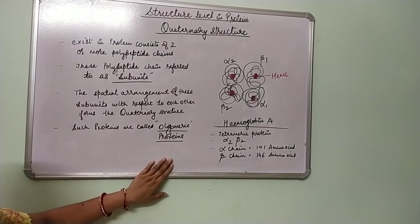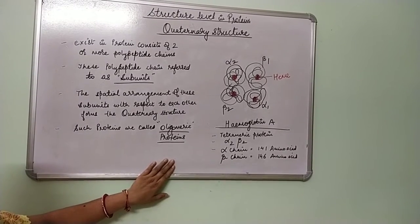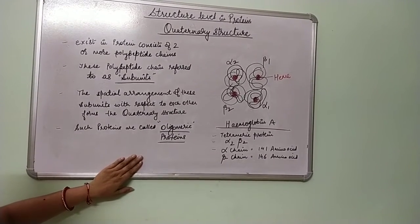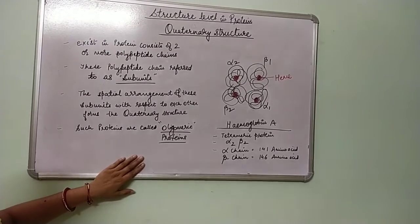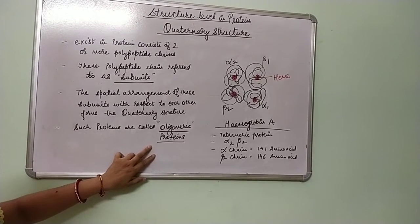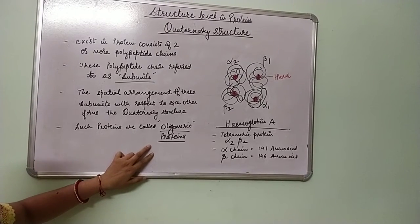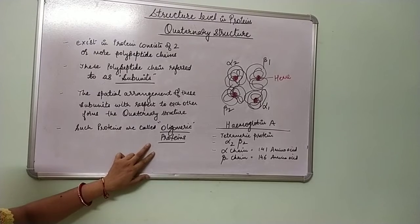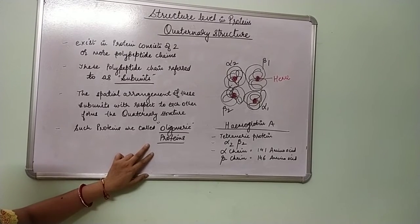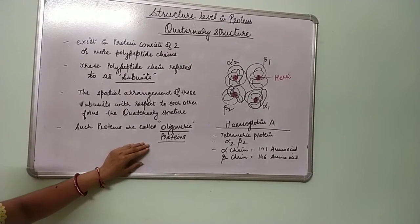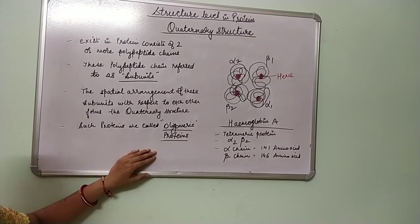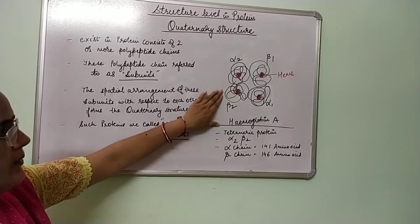The quaternary structure exists in proteins which consist of two or more polypeptide chains. These polypeptide chains are referred to as subunits, and the particular arrangement of these subunits with respect to each other forms the quaternary structure. Such proteins with two or more polypeptide chains are known as oligomeric proteins. The best example is hemoglobin.